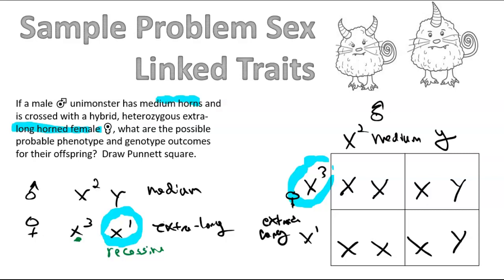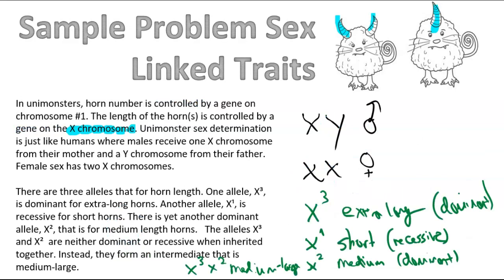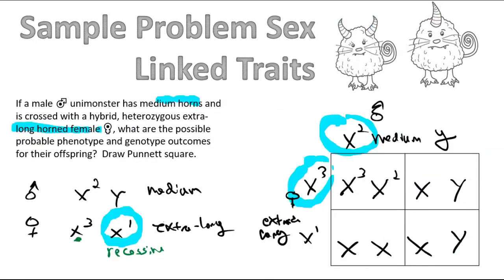Mom's egg here has a superscript 3. And then the male X here has a superscript 2. Now, if we look at our breakdown of what these things mean, that first female is going to be medium-large. Not co-dominant, but intermediate, right? So it forms an intermediate between the two.